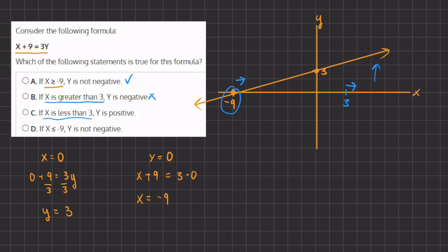C states if x is less than 3, so x is less than 3, that's the opposite direction, then y is positive. Well, we see that y is positive until we reach this negative 9, and then the y values become negative, and therefore C is partially correct, and therefore cannot be the right answer.